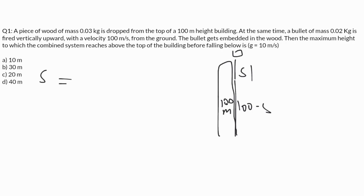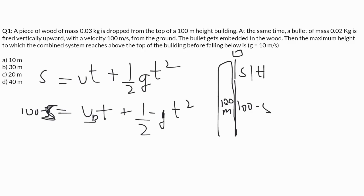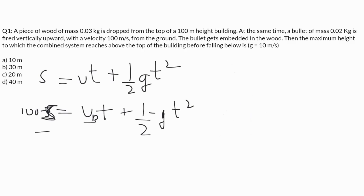For the wooden block: S equals initial velocity U times T plus half times acceleration times T squared. Since the wooden block is dropped, U is 0, so S equals half times g times T squared. For the bullet: 100 minus S equals initial speed of bullet times T plus half times negative g times T squared, since gravity opposes the bullet's upward motion. Time T is the same for both at the point of impact.